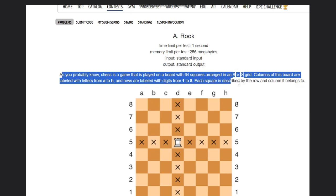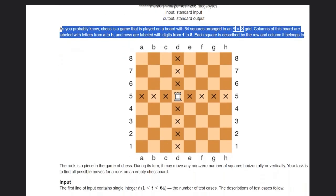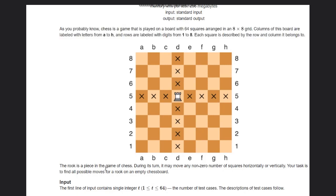Each square is described by the row and column it belongs to. You can see the rook and the numbering and alphabets. The rook is a piece in the game of chess. During its turn, it may move any non-zero number of squares horizontally or vertically.